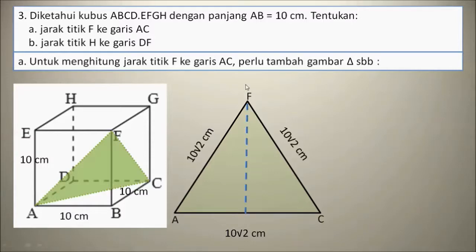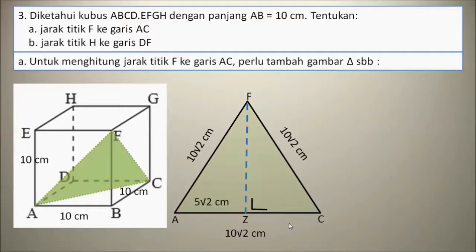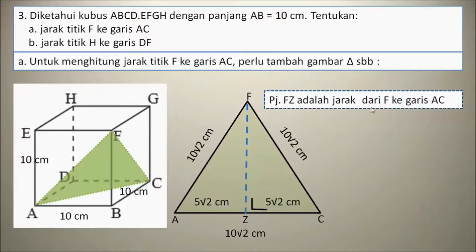Selanjutnya, kita hubungkan titik F dengan sebuah garis yang tegak lurus AC, sehingga garis ini berpotongan dengan AC, dan kita beri nama perpotongannya adalah titik Z. Karena segitiga ACF adalah segitiga sama sisi, maka AZ sama dengan ZC, sama dengan 5 akar 2 cm, setengah dari AC, yaitu setengah dari 10 akar 2 cm. FZ adalah jarak dari F ke garis AC, sesuai dengan pertanyaan A tadi.